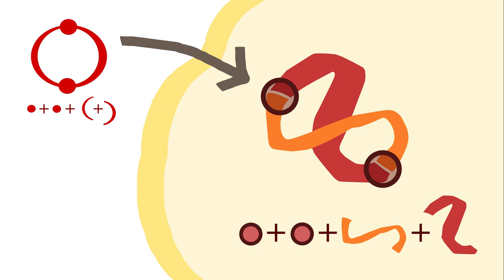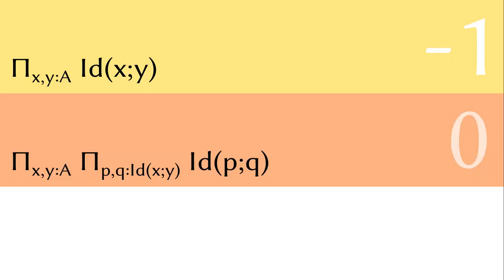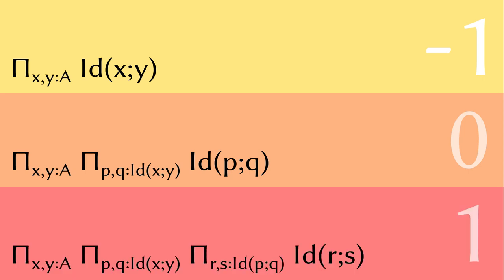The recursive definition of truncation levels is based on this decomposition. Let's look at the level minus one, the level zero, and level one. The condition of being at level minus one means that for any two points, there is an arc identifying them. The condition for level zero is that for any two points and any two arcs, there is a disk filling the hole made of the two arcs.